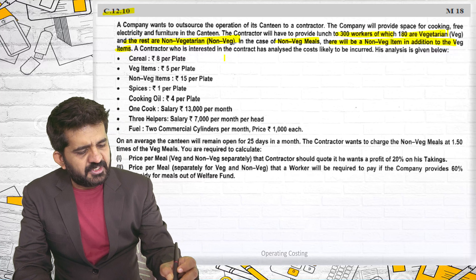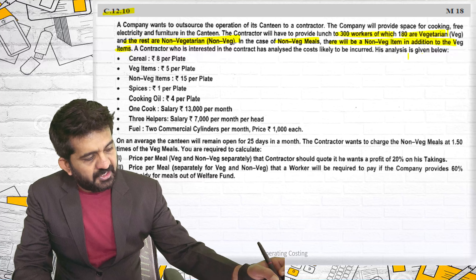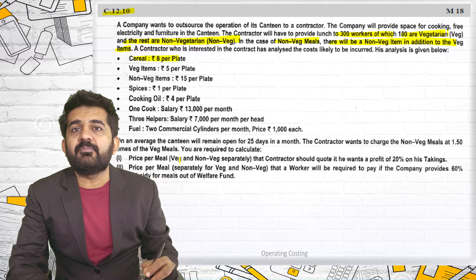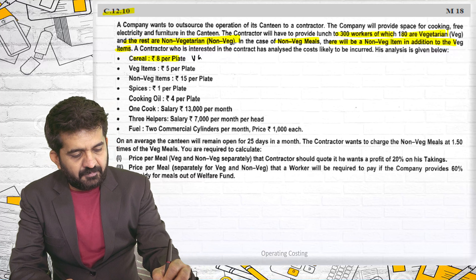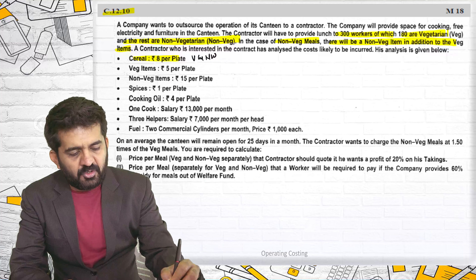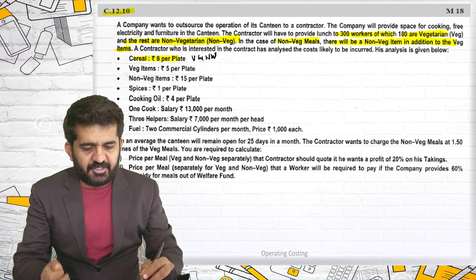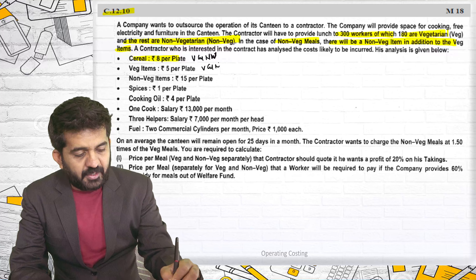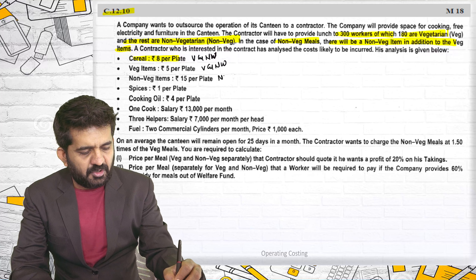A contractor interested in the contract has analyzed the costs likely to be incurred. Cereals are ₹8 per plate — applicable to both veg and non-veg since non-veg also includes all veg items. Veg items ₹5 per plate — also provided to both. Non-veg items only to non-veg workers.